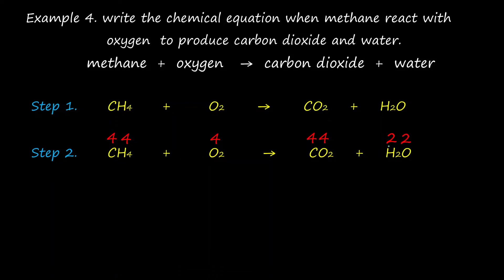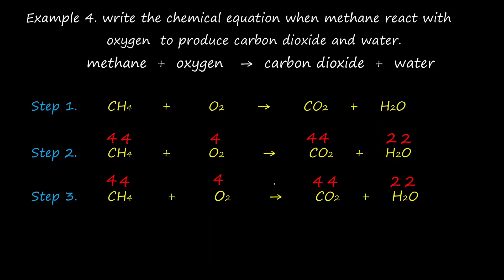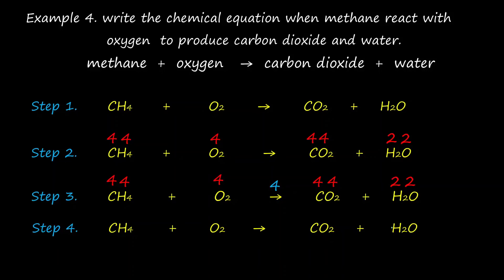The third step is to find the LCM of each total valence. The LCM of 4 and 2 is 4 — write this LCM on the arrow. The fourth step is to write the coefficients by dividing the LCM by each total valence. 4 divided by 4 for methane equals 1 — no need to write 1. 4 divided by 4 for oxygen also equals 1 — no need to write 1. 4 divided by 2 for water equals 2 — write coefficient 2.